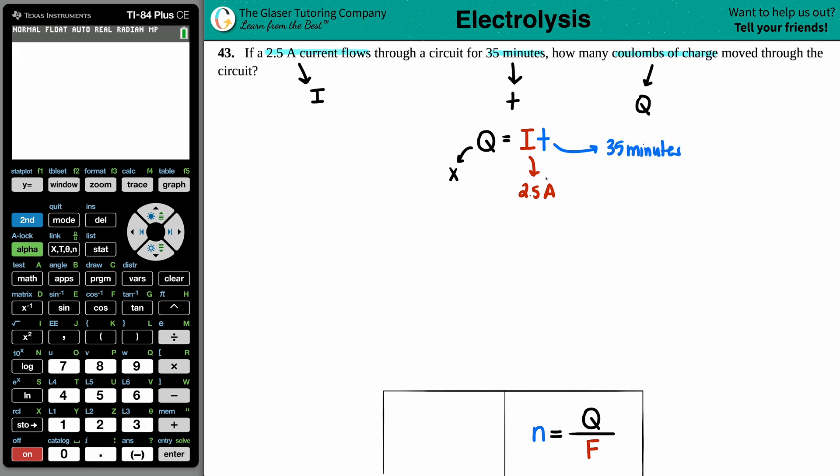Now the thing here is that your current should always be in amps, so that's the right unit. However, when we're using q equals i times t, your time has to be in seconds, not minutes. So the first thing I'm going to do is convert minutes into seconds. This should be pretty straightforward. Minutes into seconds, we always just multiply by 60, so 35 times 60, and I get 2,100 seconds.